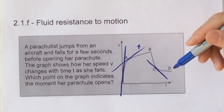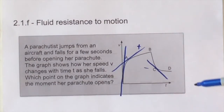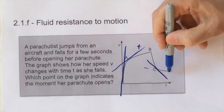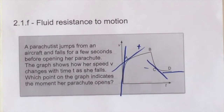When we look at point C we've got a negative acceleration, which means it's slowing down as it travels downwards. Lastly, we've got an almost horizontal line which shows terminal velocity. Having understood all of that, we can see that the point when the parachute opens is B.